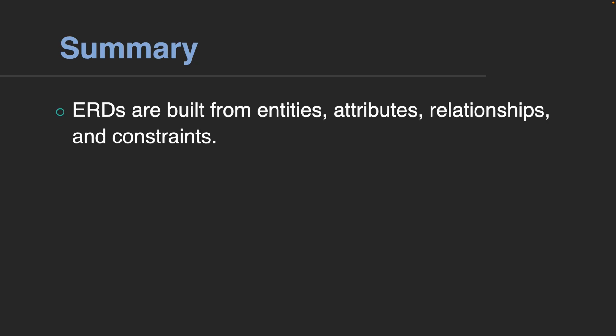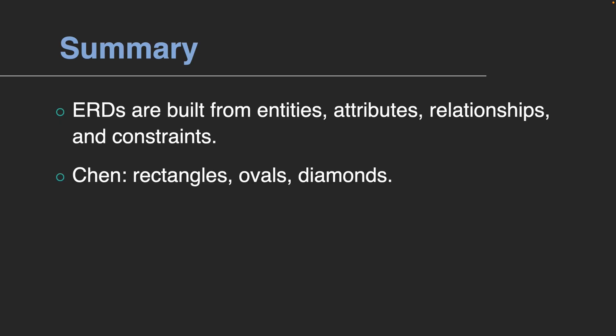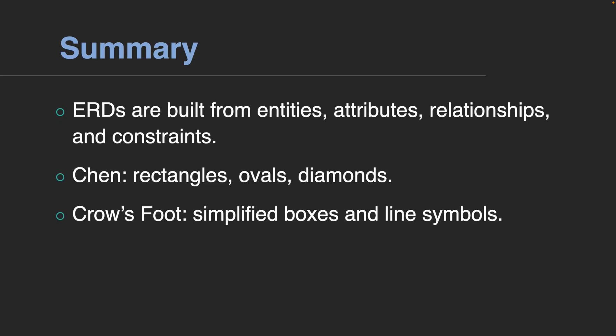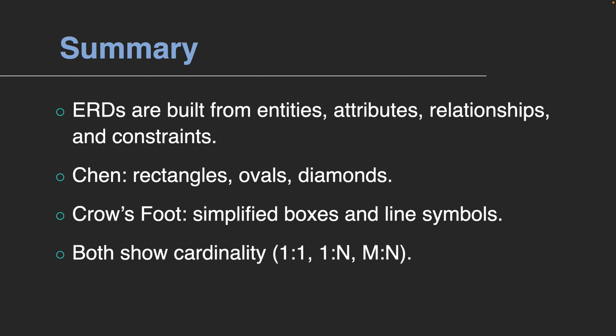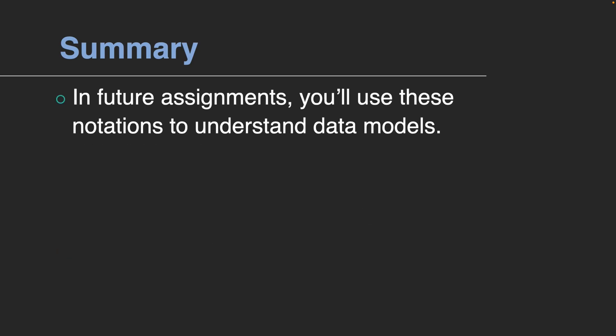So, let's recap. An ERD is built from entities, attributes, relationships, and constraints. Chen notation uses rectangles, ovals, and diamonds, while Crow's Foot uses simple boxes and line symbols. Both show cardinality: one-to-one, one-to-many, and many-to-many. Together, these give the foundation for building strong and clear database designs. In future assignments, you'll begin to use these notation styles for understanding how a particular data model is laid out and its internal relationships.